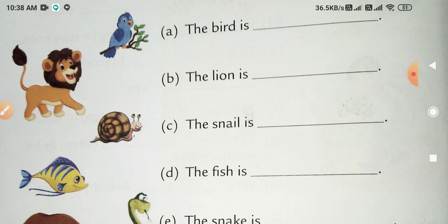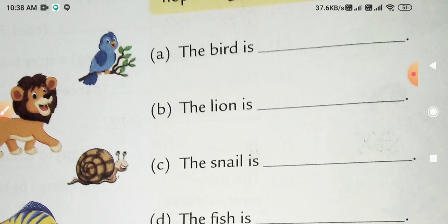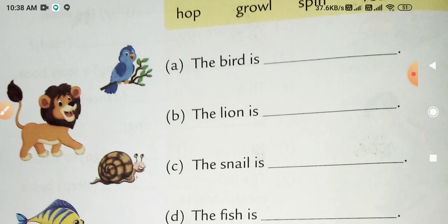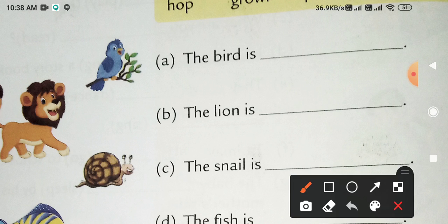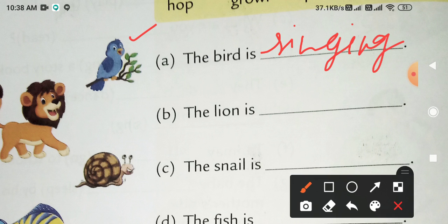First, look at the picture carefully. First we have bird. Bird means chidiya. From your box the word given is sing. So first you will fill singing. Next is the bird is singing.